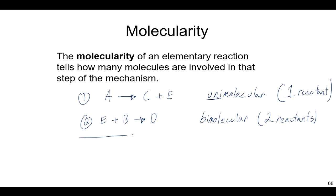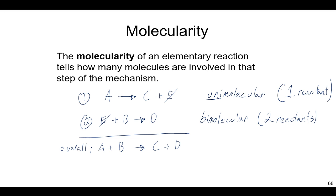Adding up the mechanistic steps: there's an E on each side, so it drops out. A and B appear in the reactants, and C and D appear in the products, giving us the overall reaction. The molecularity describes how many molecules physically have to bump together to react. Besides unimolecular and bimolecular, you can have termolecular — a step that requires three molecules to simultaneously collide, such as A, B, and C all coming together to create product D.